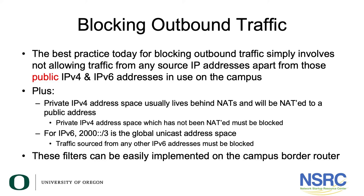The best practice today for blocking outbound traffic involves not allowing traffic from any source IP address apart from your campus's public IPv4 and IPv6 addresses. If you're using NAT and have a private IPv4 address space, that should not be going out onto the internet. Also make sure there are no packets sourced from unused IPv6 address space outside of the 2000::/3 block. These filters can be easily implemented on the campus border router.